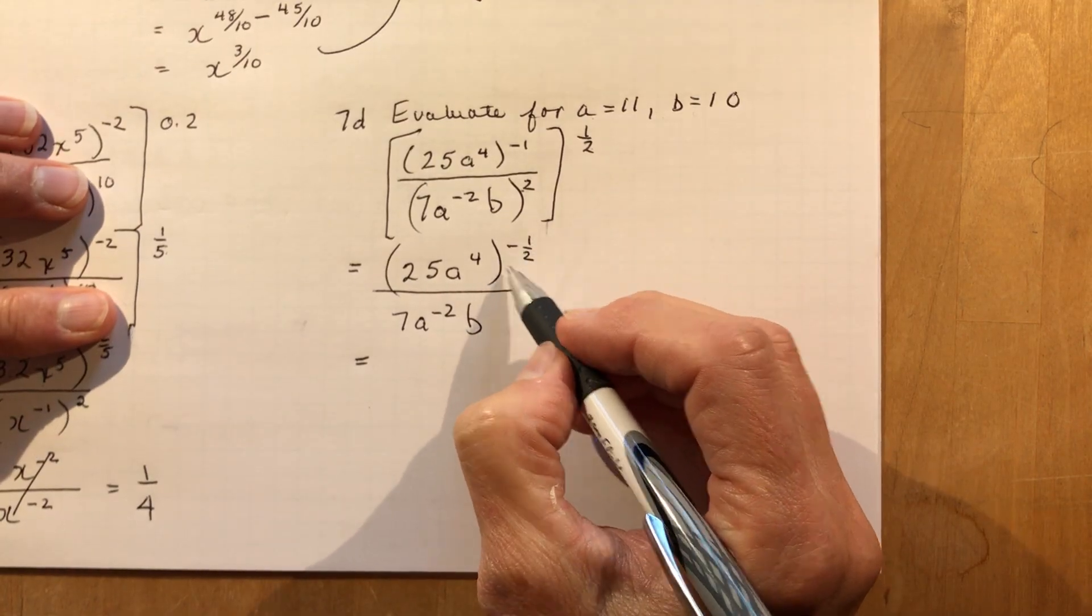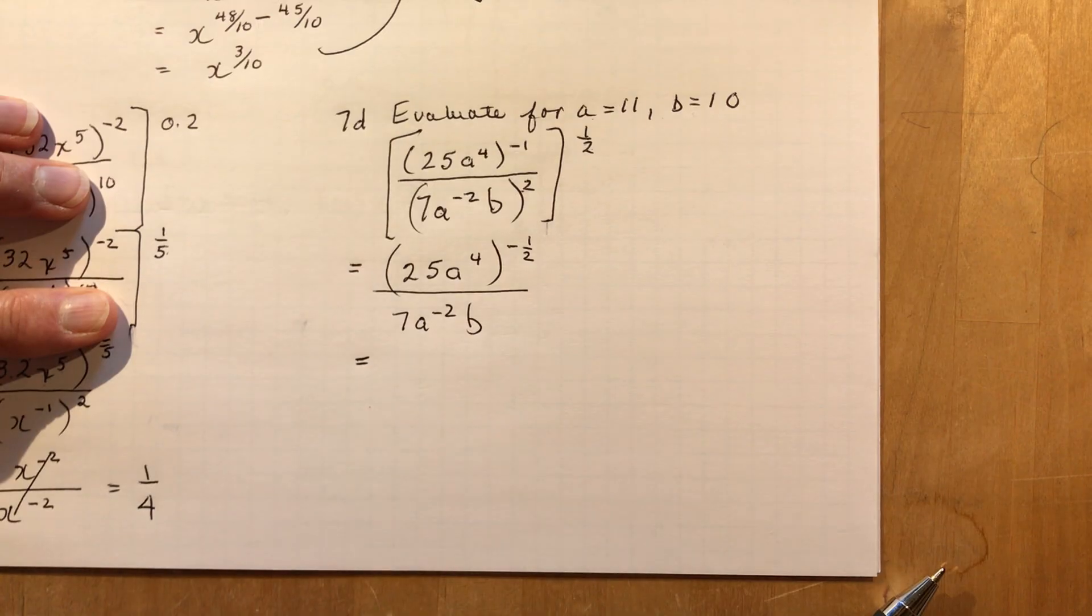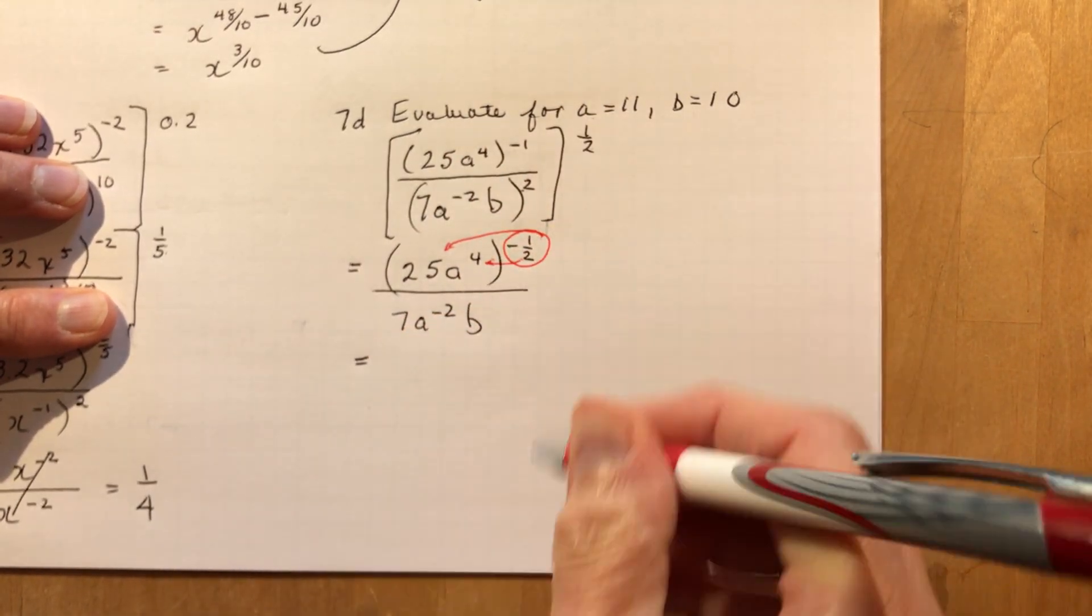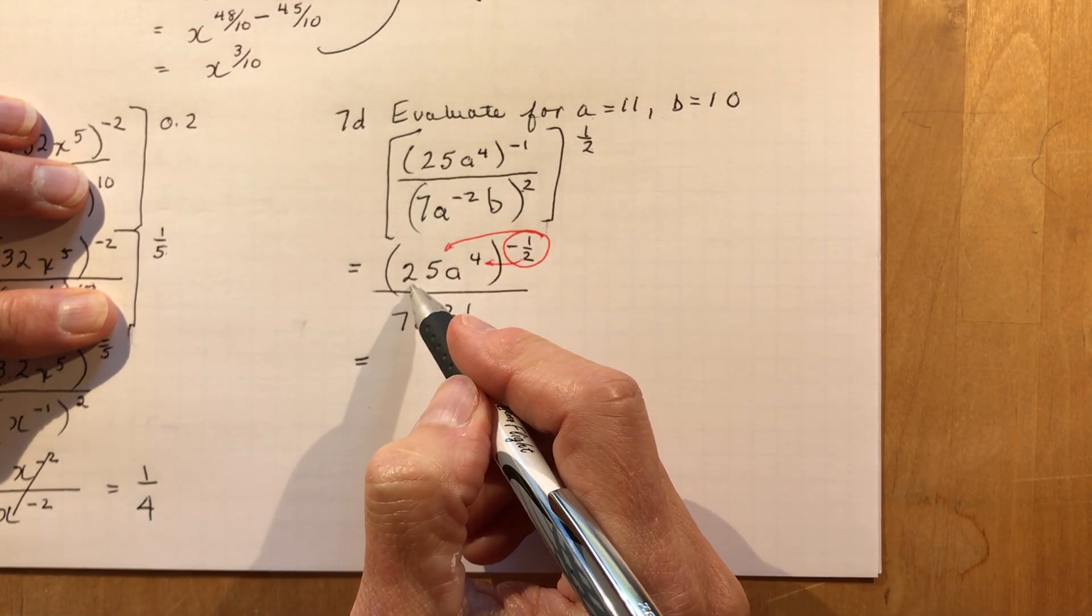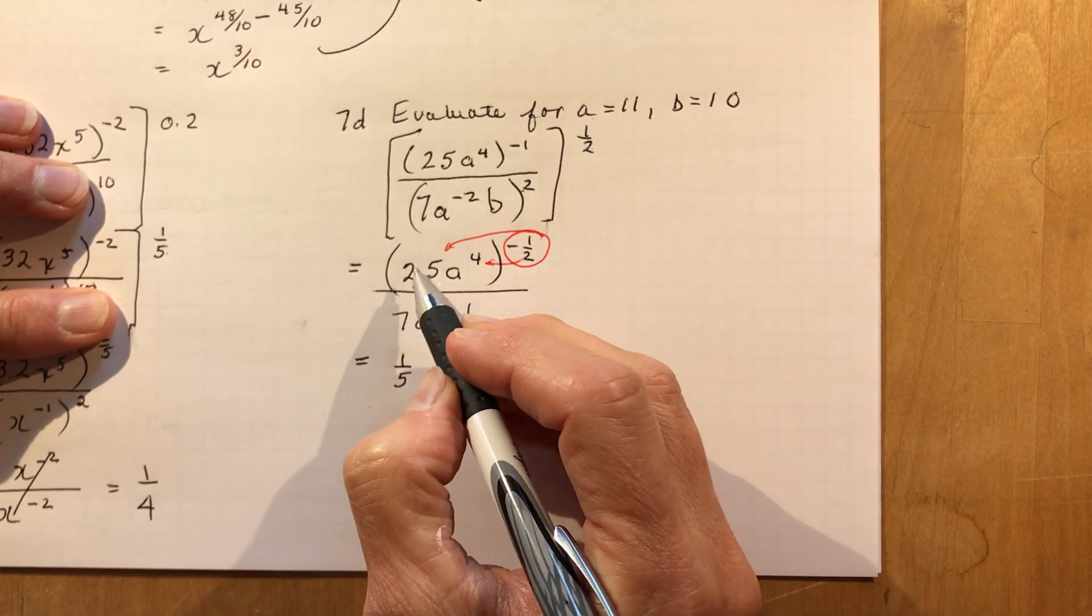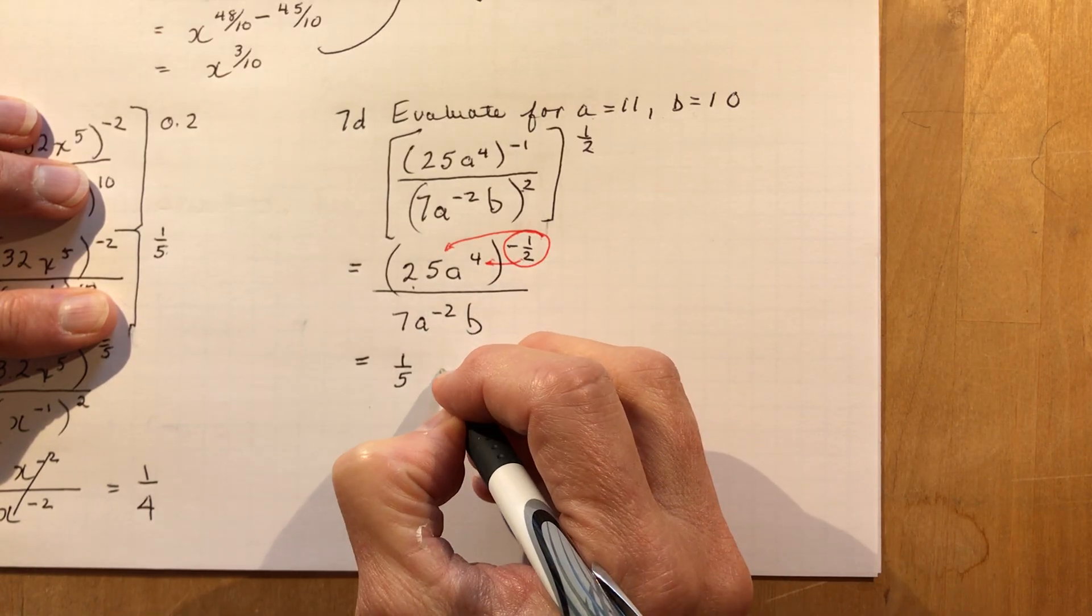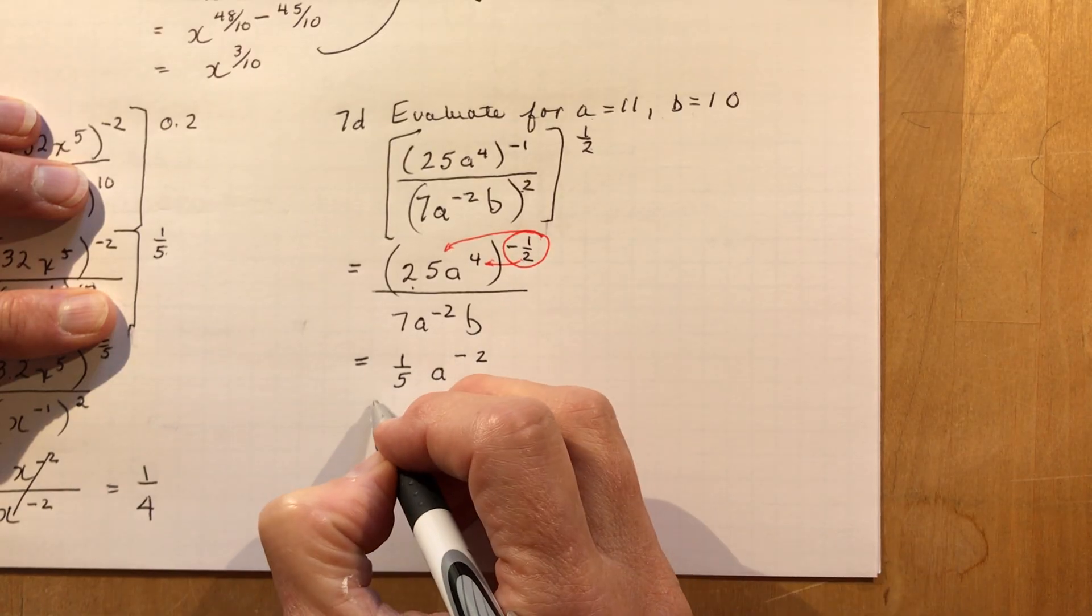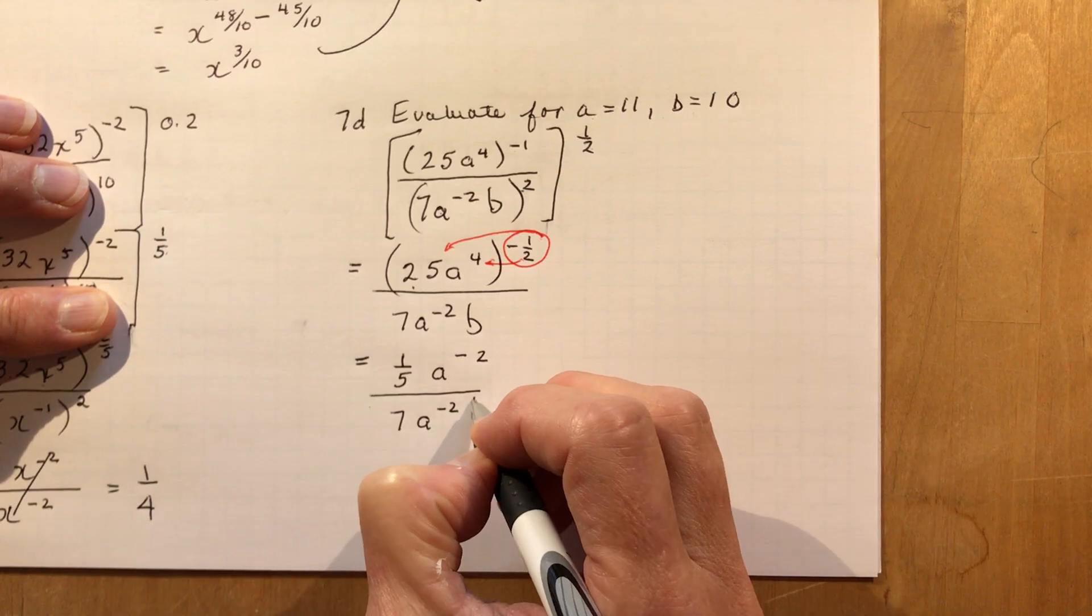Okay, so now I have a negative 1/2. So 25 to the negative 1/2, remember like I said before, you have to apply this to this one and to this one. So the square root of 25 is 5 and I want 1 over it, so that's 1/5. Square root of 5 to the power of 1, 1 over it. And A to the fourth to the minus 1/2 is A to the minus 2, 4 times 1/2 is minus 4/2. And in the denominator, I have 7A to the minus 2B.